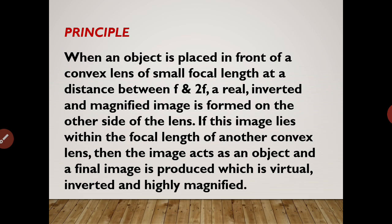then the image acts as an object and a final image is produced which is virtual, inverted and highly magnified. The important condition here is that the image formed due to the first lens must lie within the focal length of the other lens.